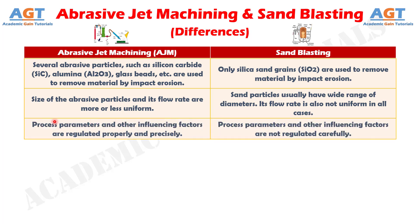Number 3: In abrasive jet machining, process parameters and other influencing factors are regulated properly and precisely. Whereas in sandblasting, process parameters and other influencing factors are not regulated carefully.